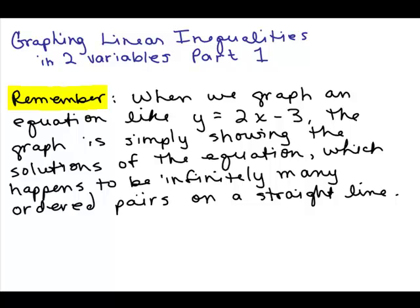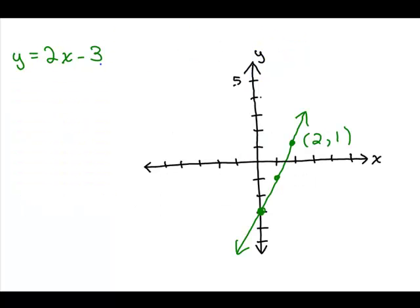We're going to learn how to graph linear inequalities in two variables. First of all, remember when we graph an equation like y equals 2x minus 3, the graph is simply showing all the solutions to this equation. There are infinitely many solutions because there are a lot of ordered pairs that make this equation true, so you get infinitely many ordered pairs on a straight line. Here's this equation, y equals 2x minus 3, and those are all the ordered pair solutions that work in this equation.